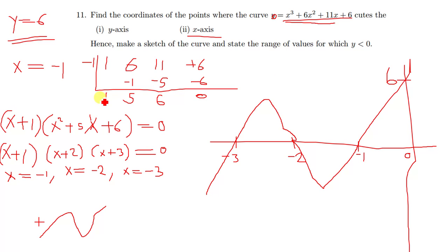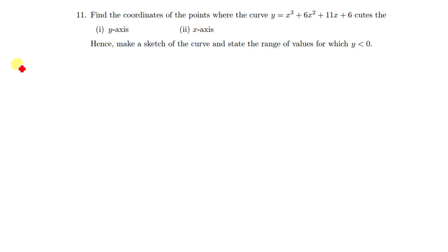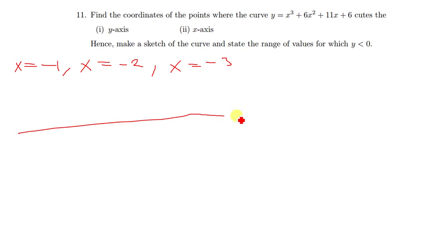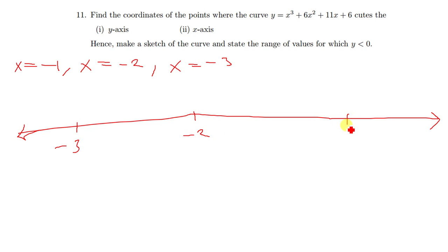So from there, we can now find the last part, which is stating the range of values for which y is less than 0. Here, what we are going to use are the x-intercepts. The x-intercepts we found were x equals negative 1, x equals negative 2, and x equals negative 3. I'm going to draw a number line here and put these numbers: negative 3, negative 2, and negative 1. All numbers on the left side of negative 3 satisfy x less than negative 3.